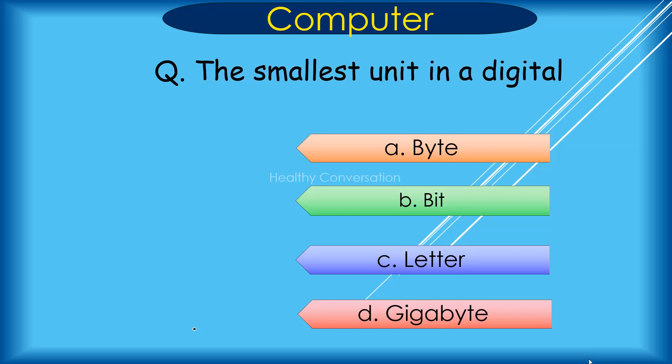The smallest unit in a digital system is dash. The options are: A. Byte, B. Bit, C. Letters. Correct answer is B. Bit.